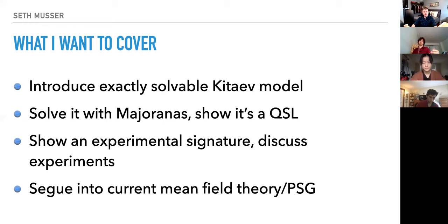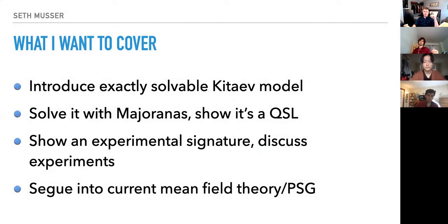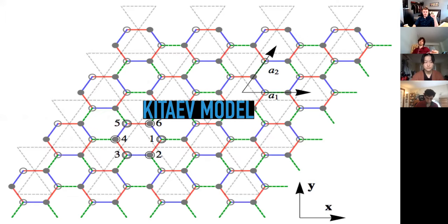That's just a review of last time. What do I want to cover today? In order to address some of the approximations and hand-waving from last time, we're going to introduce the exactly solvable Kitaev model. Then we'll solve it with Majoranas, see that it's a quantum spin liquid by our standards, look at some experimental signatures and actual experiments, and hopefully get to the projective symmetry group. If we don't, I'll include a link to Michael Levin's talk on partons and the projective symmetry group.